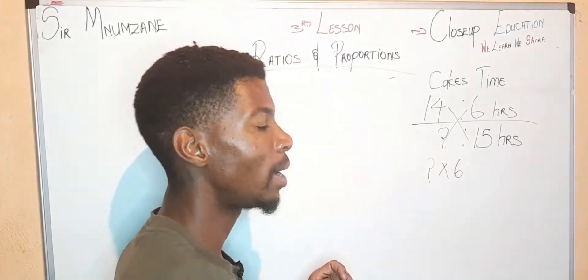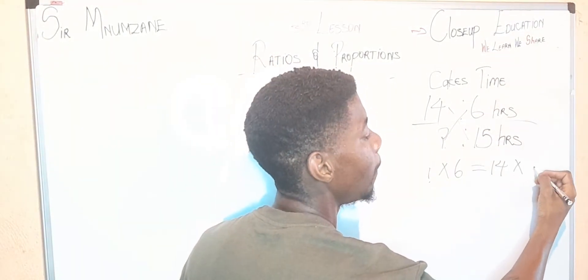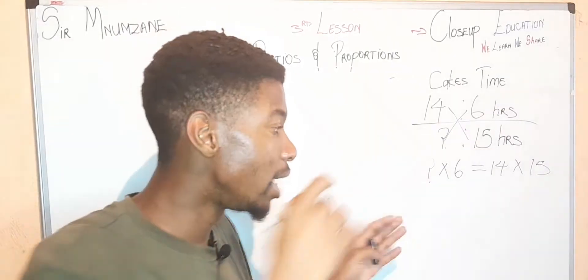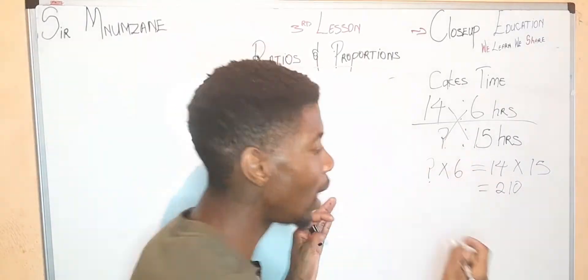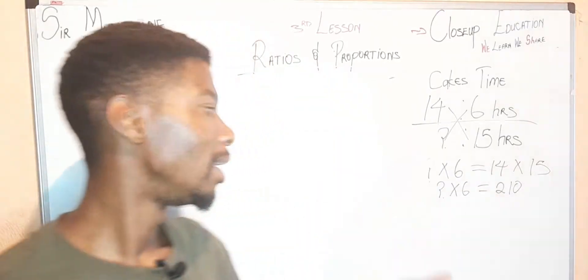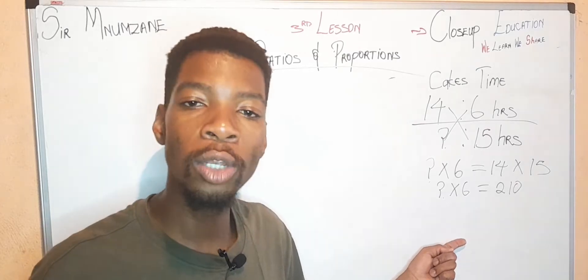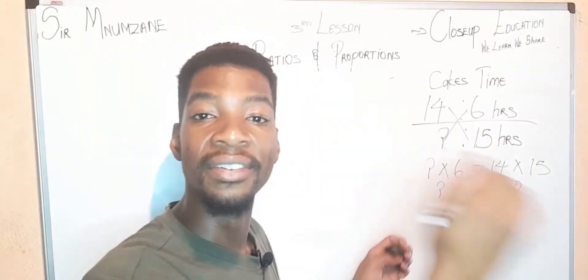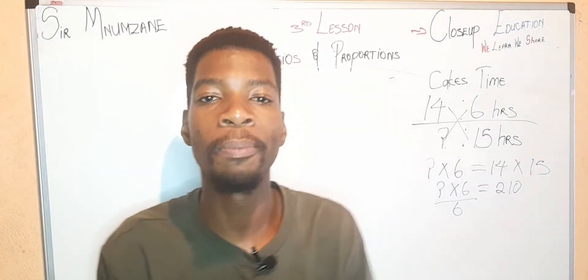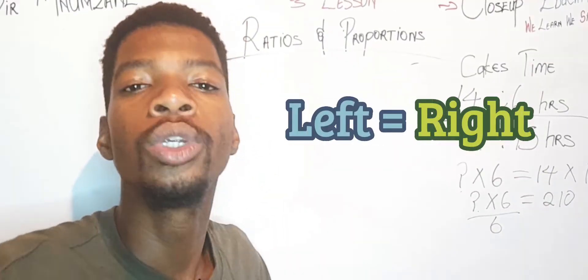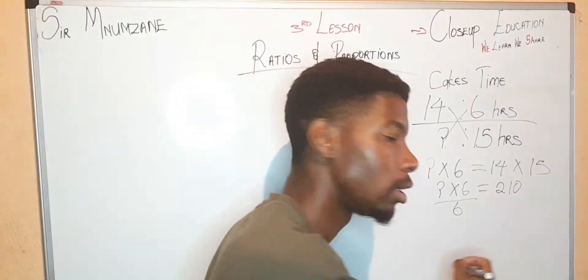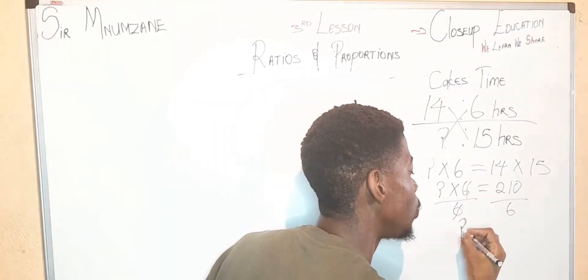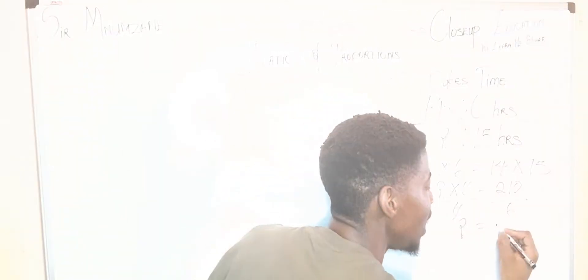You remember the cross multiply formula. We'll be saying the unknown multiplied by 6 equals 14 multiplied by 15. That's the cross multiplication formula. Our answer will be 210. We still have this 6. How do we remove that 6? Divide it by the same number. So divide by 6, and what you do on the left you have to do on the right.